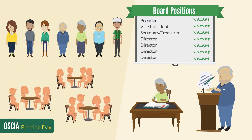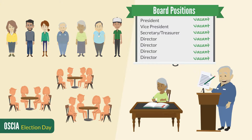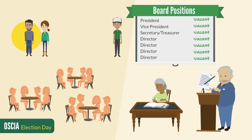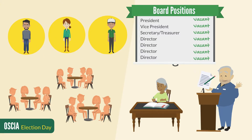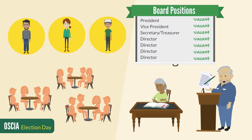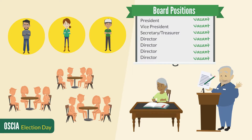On Election Day, the committee chair will direct the procedure, and several committee members will be selected to act as scrutineers. It is the responsibility of all committee members to remain neutral and unbiased throughout the entire elections procedure.